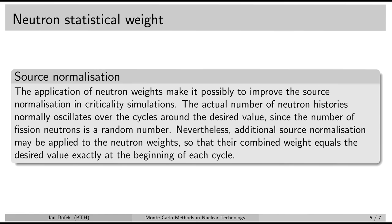In the case of non-analog Monte Carlo criticality simulations, we can actually improve the source normalization, because we have another tool: the weights of the neutrons. So what we can do is, if we generate more than the required number of neutrons for a specific cycle, then we can simply reduce their statistical weight below 1, in such a way that the combined statistical weight equals exactly the required batch size — the number of fission neutrons we want to have. So in non-analog criticality calculations, there are actually two procedures for source normalization: one is the standard division of the fission cross-section by the multiplication factor, and the second is the normalization by statistical weights.